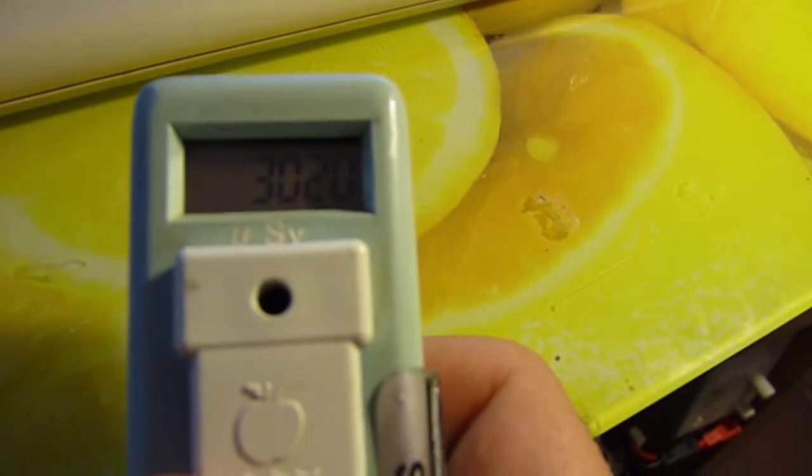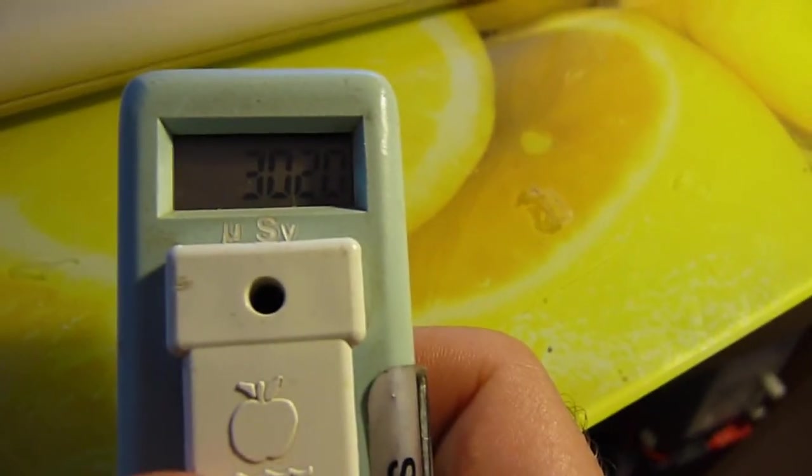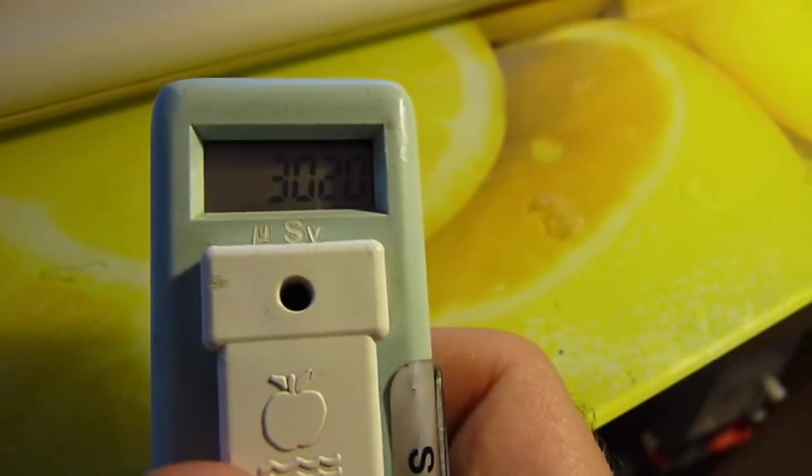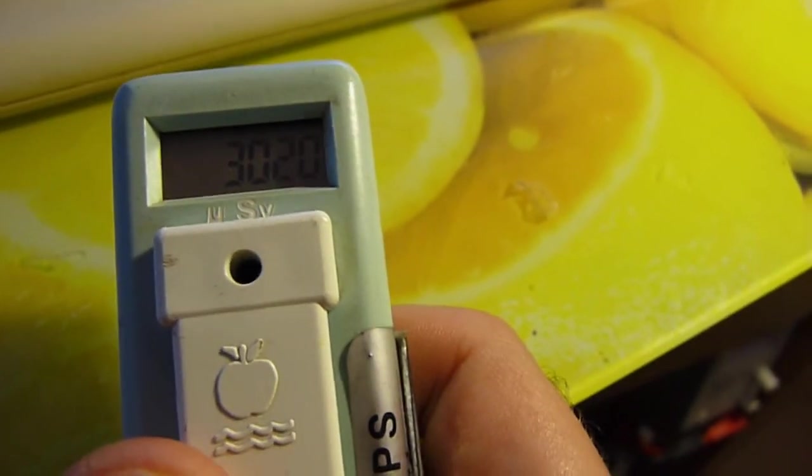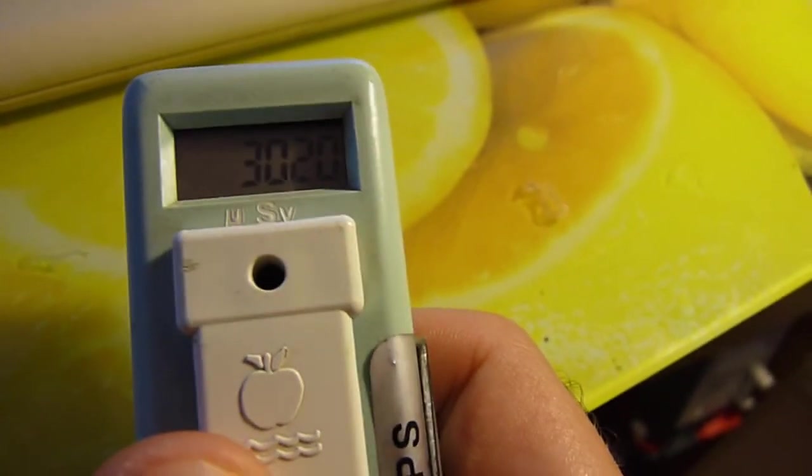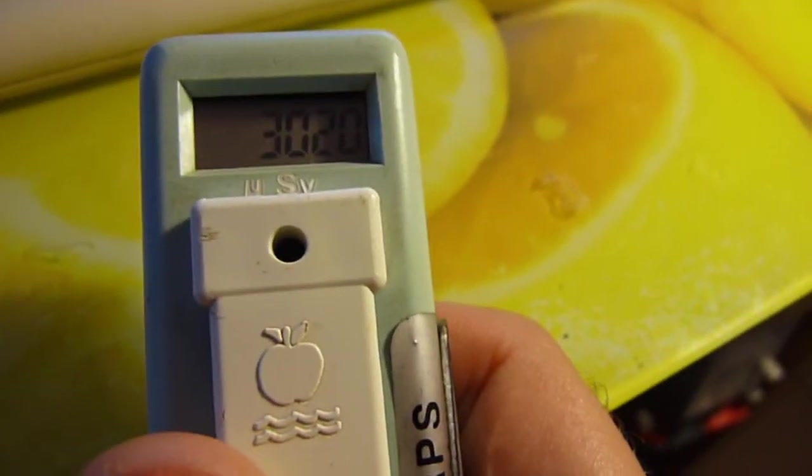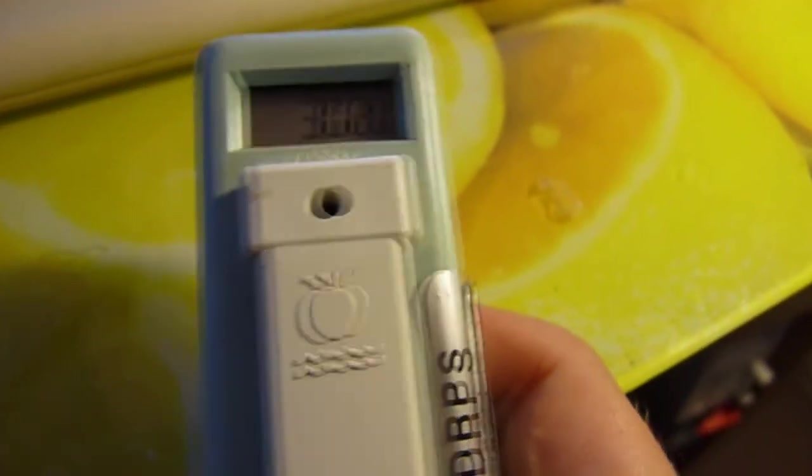It's been running for a few years now and it tells me that it's absorbed 3020 microsieverts. Since this has basically been where I've lived over the years, it essentially holds my dose in the areas where I actually live, the actual buildings. This one doesn't come out the house much.